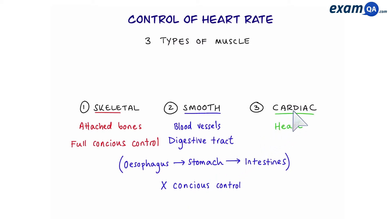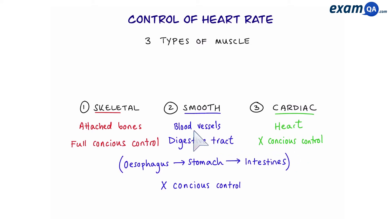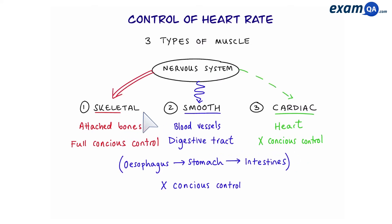And finally, the cardiac muscle, which is only found in the heart. And again, just like smooth muscle, we do not have conscious control over the cardiac muscle either. All three types of muscles are controlled by our nervous system, however they're controlled slightly differently. So let's have a look at the differences.